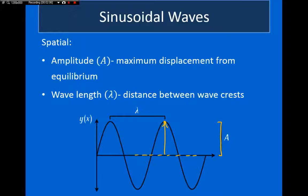Now, the distance between the crests of a wave, so the maximum of the waves, is equal to the wavelength. So, the wavelength describes how far apart the waves are in space.